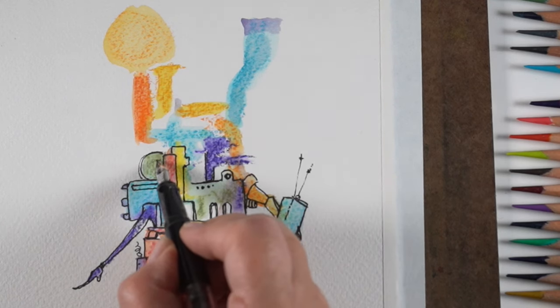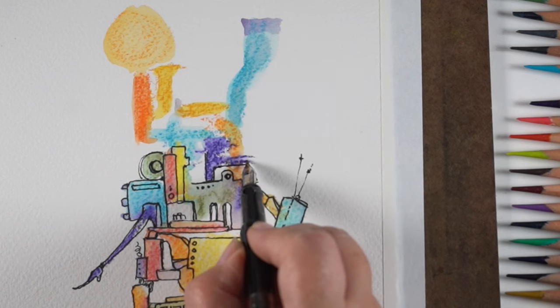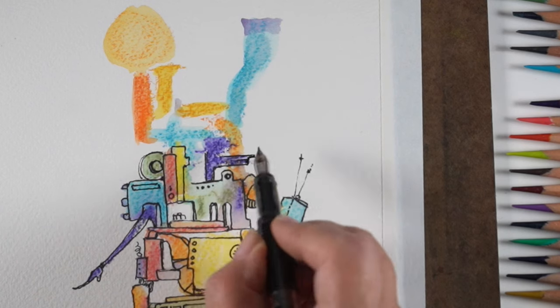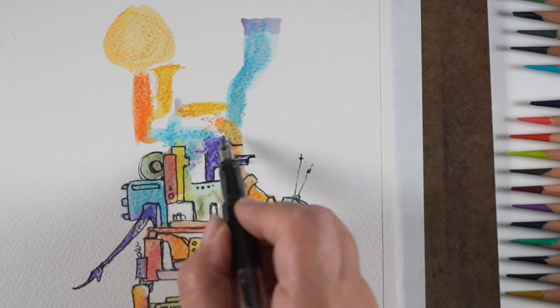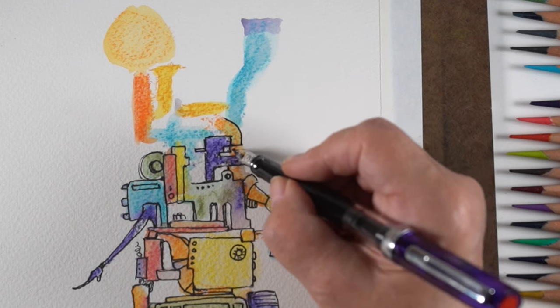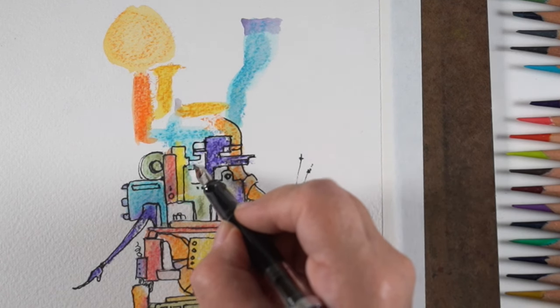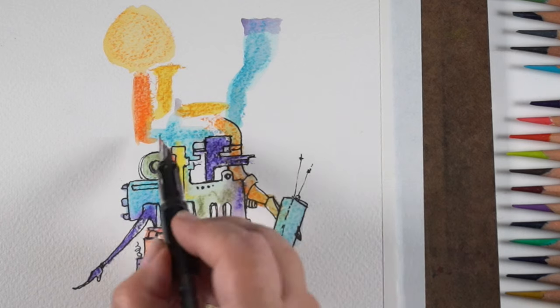Not so with Inktense pencils. At least not as much. Because these are permanent, I'm going to put permanent in quotes because you can move them if you work at it. But these are permanent when they dry, which means, you saw me with the water. I just kept going over the whole thing with the water and I got bleeds of color. I got one color mushing into the other, which I was fine with.